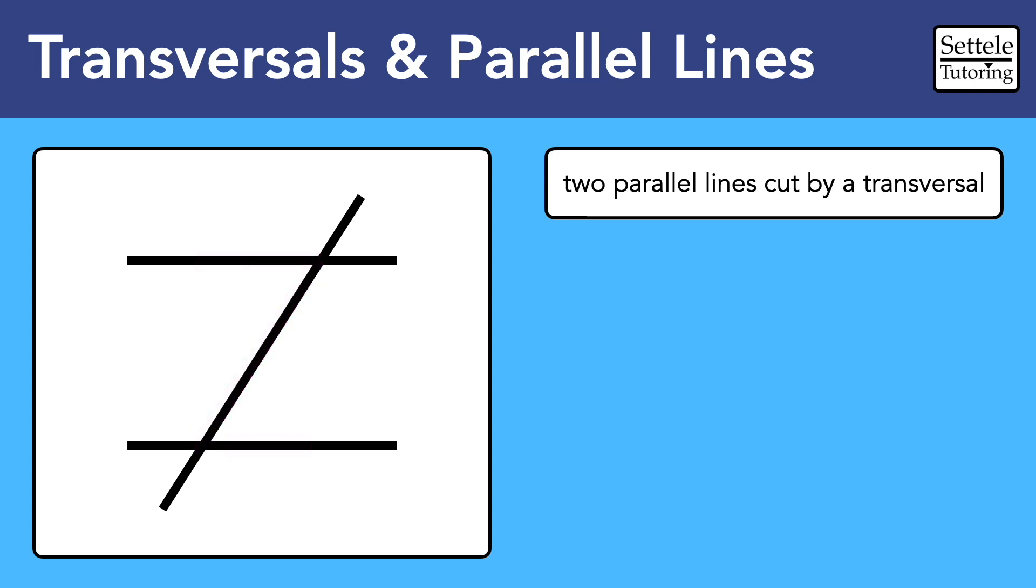This shape is important because the parallel lines create lots of pairs of congruent and supplementary angles. In school, we learn a lot of complicated names for all of the different pairs of angles.